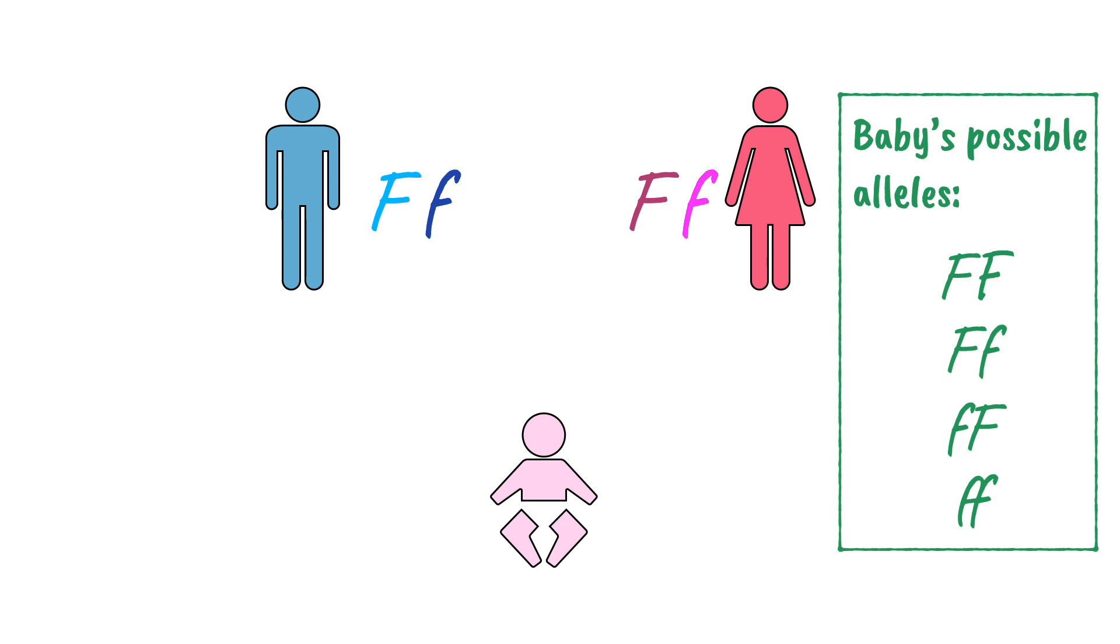As you can see, there are four different possibilities of inheritance. By the way, if we look at this possibility, we tend to write the uppercase letter first, so this combination would usually be written like this.